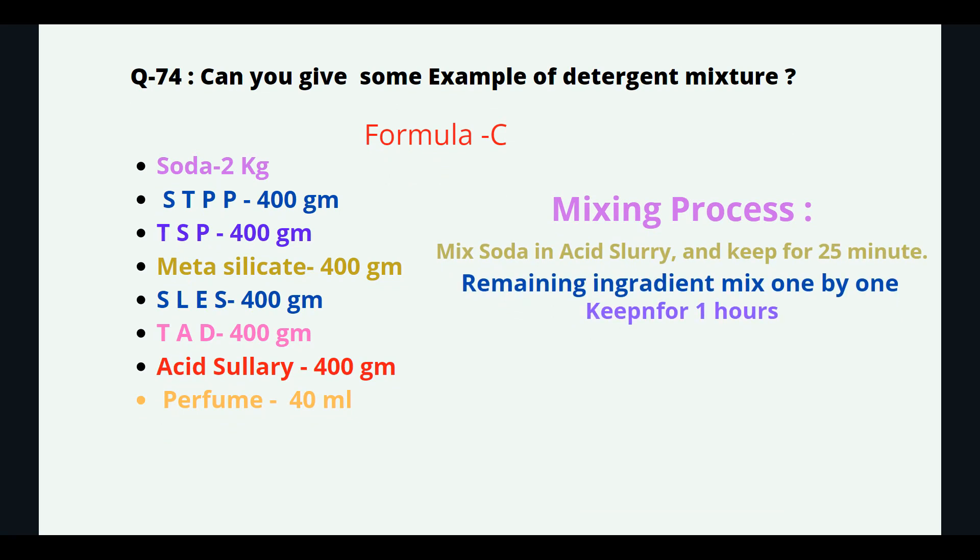Formula C: soda 2kg, STPP 400g, TSP 400g, metasilicate 400g, SLES 400g, TAD 400g, acid slurry 400g, perfume 40ml. Mixing process: mix soda in acid slurry and heat for 25 minutes, then remaining ingredients mix one by one. Keep for one hour.